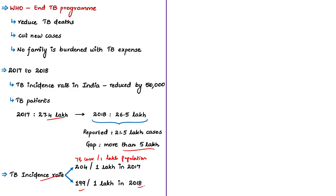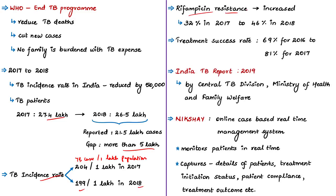Regarding drug-resistant TB, the number of patients being diagnosed for resistance to rifampicin increased from 32% in 2017 to 46% in 2018. On treatment success, the Global TB Report 2018 recorded a success rate of 69% for 2016; the 2019 report shows this increased to 81% for 2017, indicating that success in fighting tuberculosis is growing over the years.